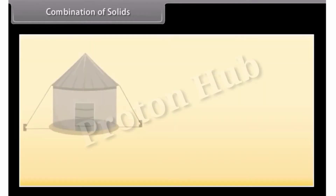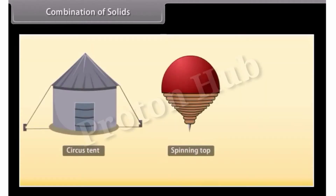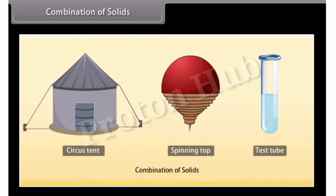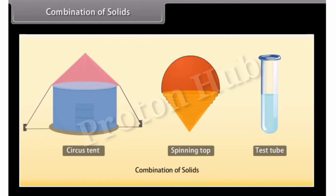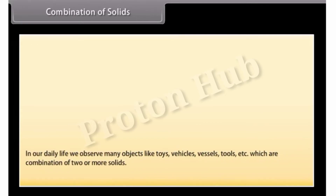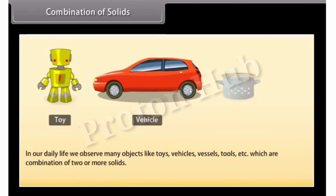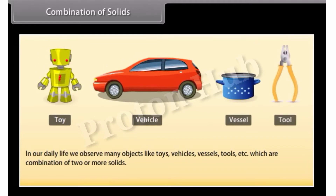Students, look at these solids. These solids are made up of two or more solids. A circus tent is a combination of a cone and a cylinder. A spinning top is a combination of a hemisphere and a cone. And a test tube is a combination of a hemisphere and a cylinder. In the same way, in our daily life we observe many objects like toys, vehicles, vessels, tools, etc., which are a combination of two or more solids. Let's learn to find their surface areas and volumes.